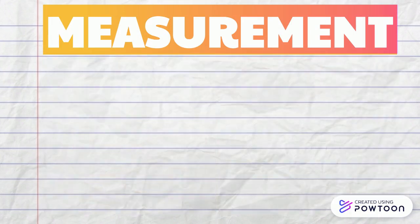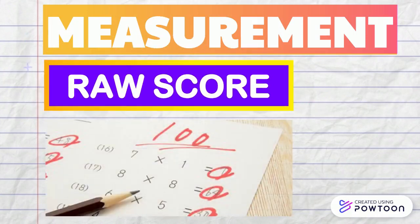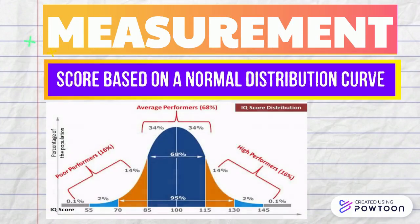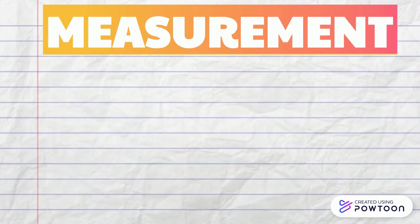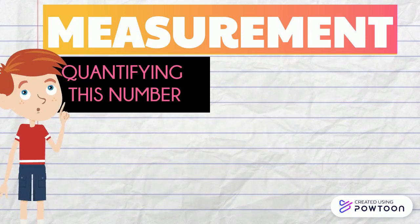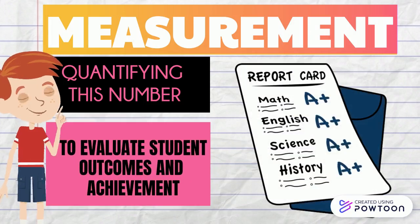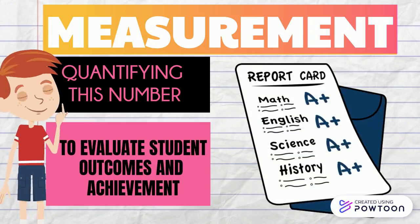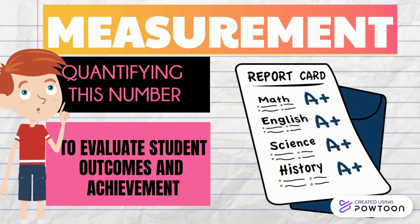The number can be a raw score or a score based on a normal distribution curve. The process of quantifying this number is separate from using this information to evaluate student outcomes and achievement.